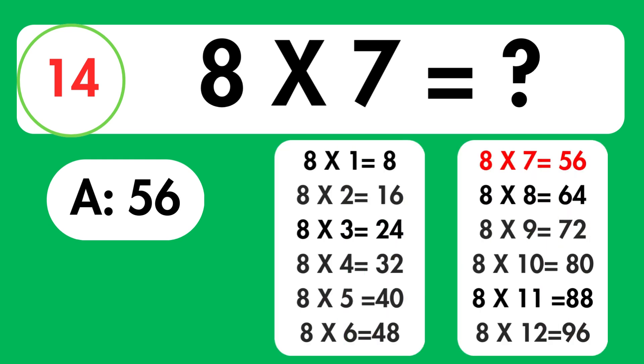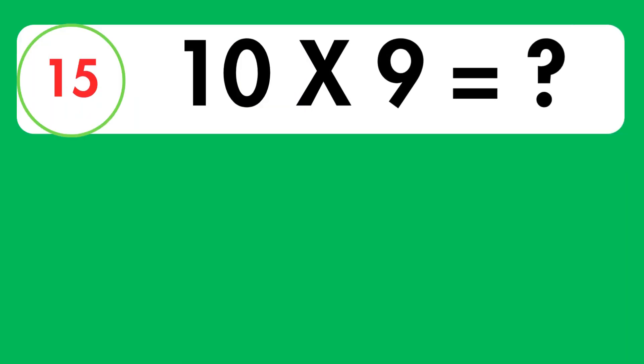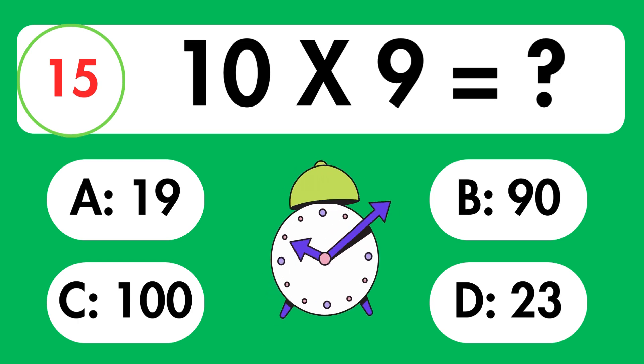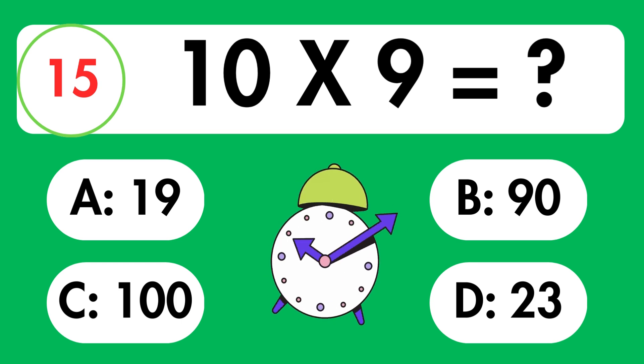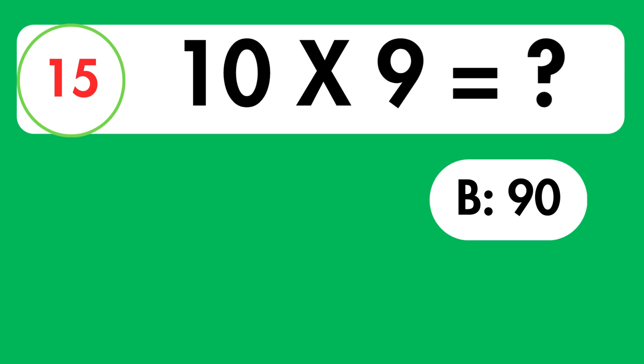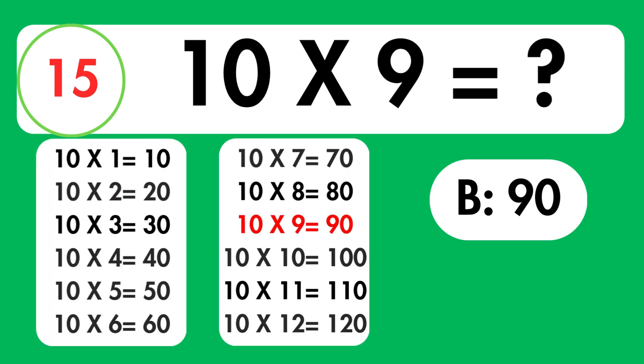8 times 7 is equals 56. Question 15. What is 10 times 9 equals? Time's up. The answer is 90.